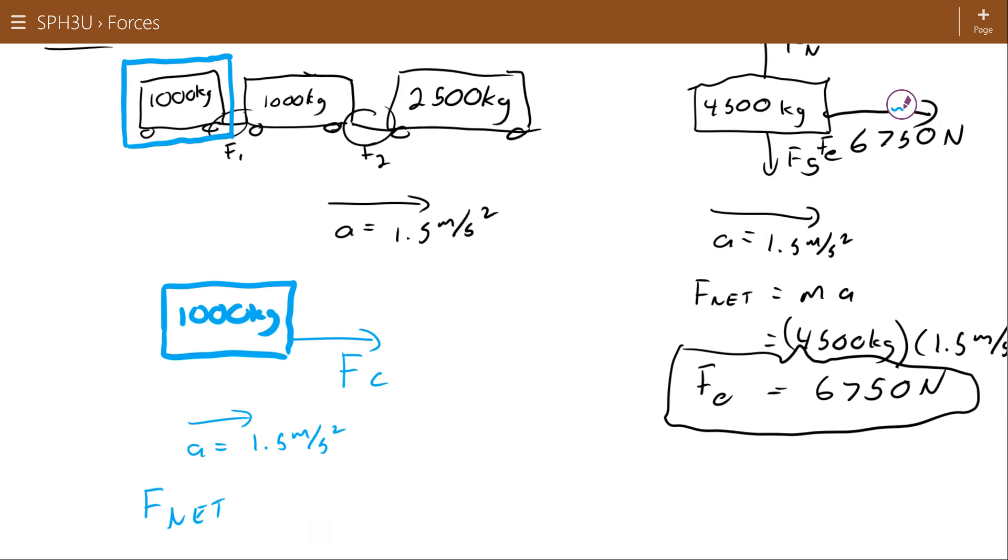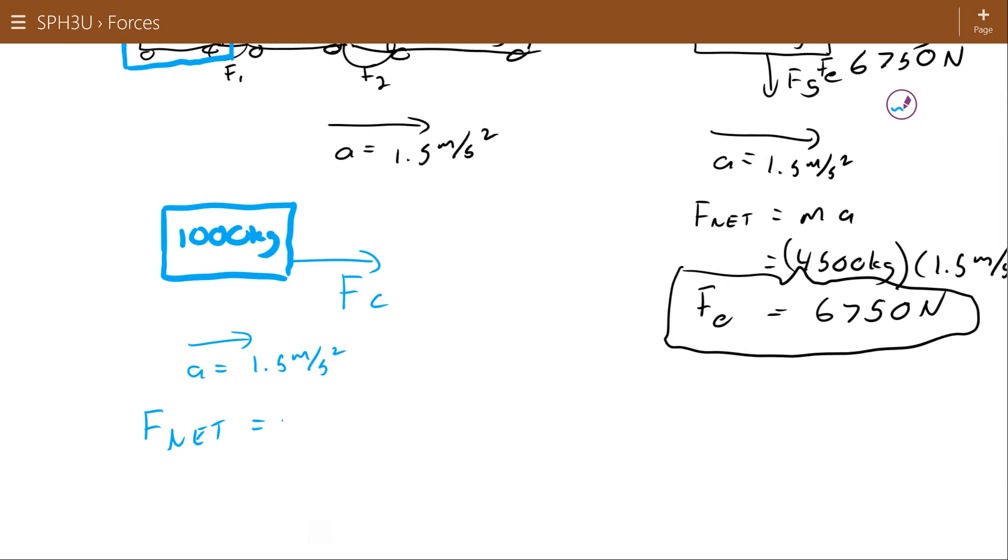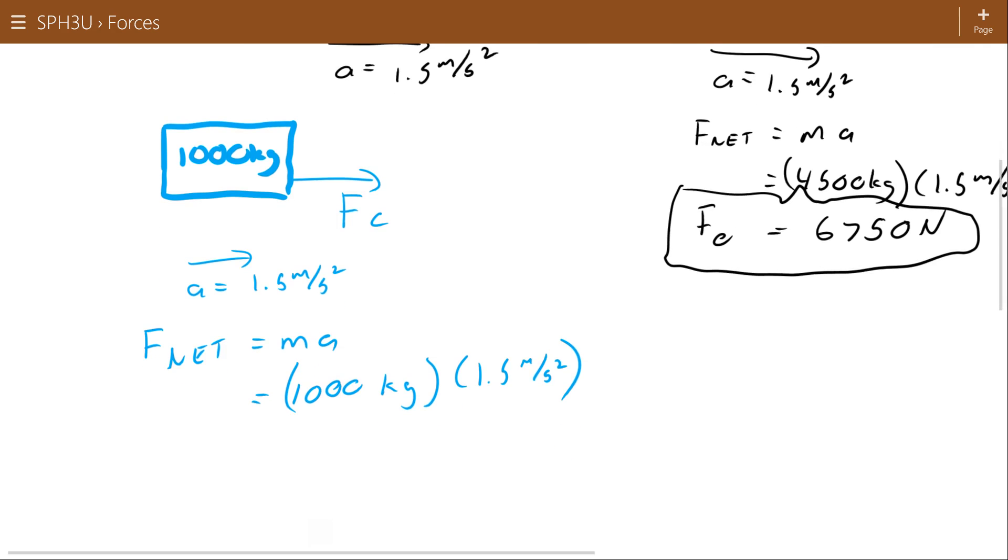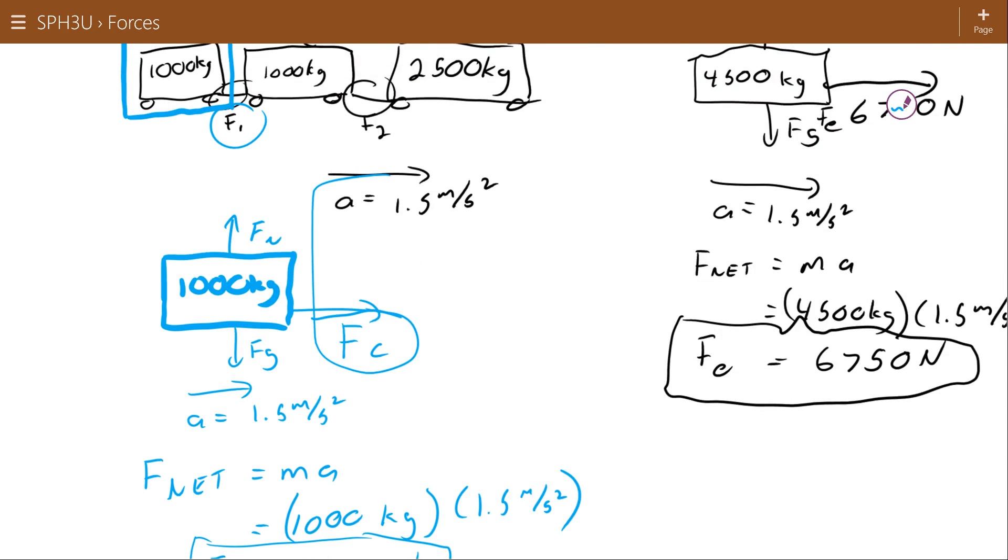So F_NET equals m times a equals 1,000 times 1.5, which gives us 1,500 Newtons. Recognizing I have a force of gravity and a normal force which are equal and opposite, this net force is really being caused by the coupling right here. So this is actually the force in that coupling, F_C1.